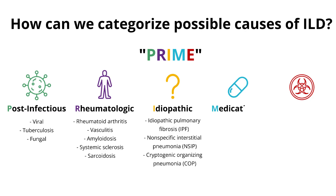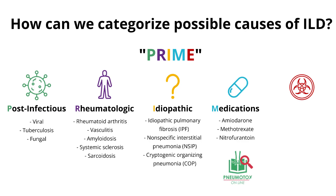Number four: medication-induced. Look over their meds and see if you find any common culprits, including amiodarone, methotrexate, and nitrofurantoin. If you want to know if a med could be a culprit, Pneumotox is a great resource — linked in the description — for a comprehensive list of medications that have been associated with ILD.